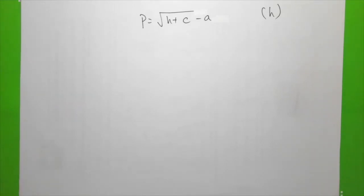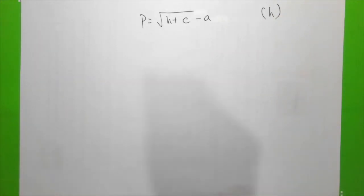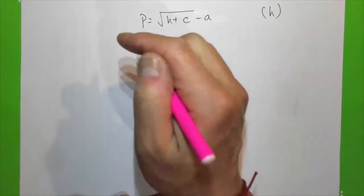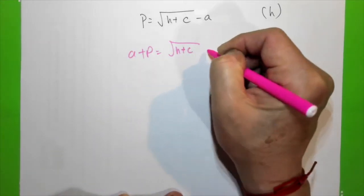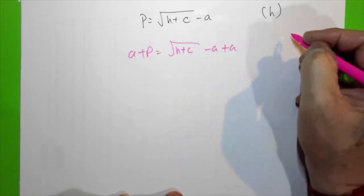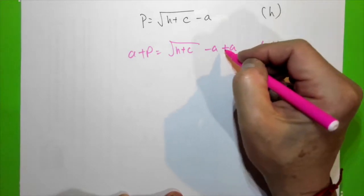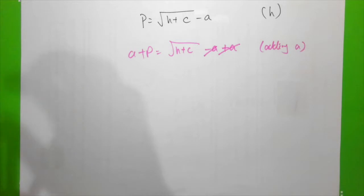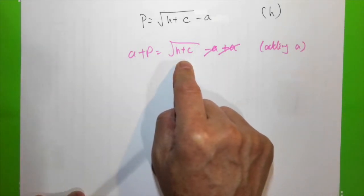Third example: P = √(h + c) − a, and we want h to be the subject. First I eliminate a from the right-hand side by adding a to both sides. So a + P equals √(h + c) minus a plus a. Since −a + a = 0, we now have a + P = √(h + c).